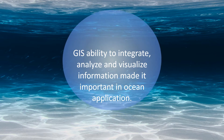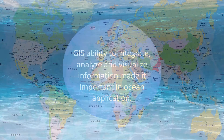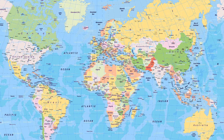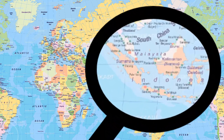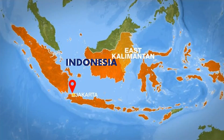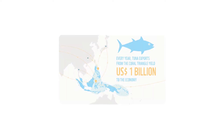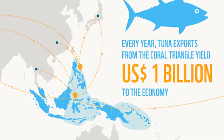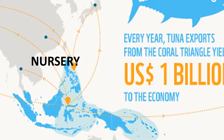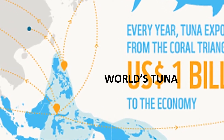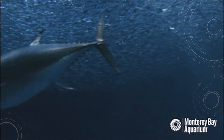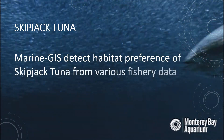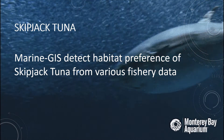Let's move on to a few examples of this application. The first example is in Southeast Asia — Indonesia, which has the Coral Triangle. Most tuna species live here and contribute to most of the world's tuna catch. In this study, marine GIS is used to detect the habitat preference of skipjack tuna from various fishery data.